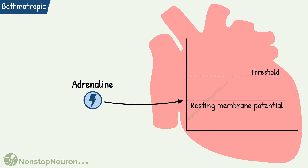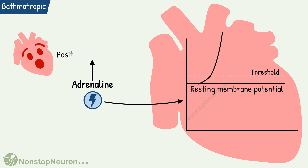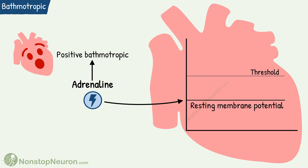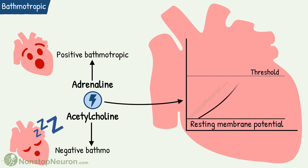For example, adrenaline brings the resting membrane potential close to the threshold, making the cell easily excitable — in other words, adrenaline produces positive bathomotropic action. On the other hand, acetylcholine produces the opposite effect, so it has negative bathomotropic action. So these were all the actions on the heart.